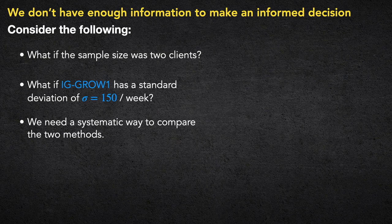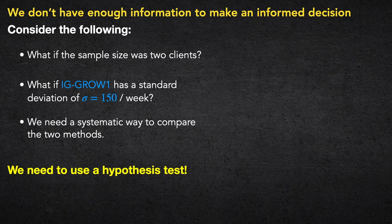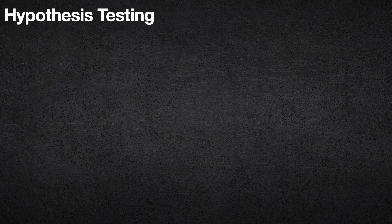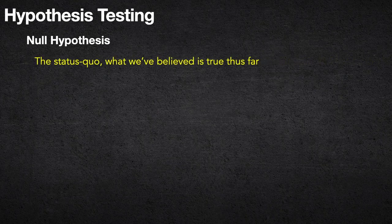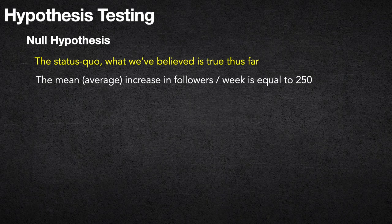Another thing to consider: what if IG Grow One has a standard deviation of sigma equals 150 followers per week? That means we expect 250 as the mean, but that mean averages even within just one standard deviation 150 per week. There's a huge difference between a standard deviation of 30 and one of 150. We need a systematic way to compare the two methods — the status quo belief versus the new idea.